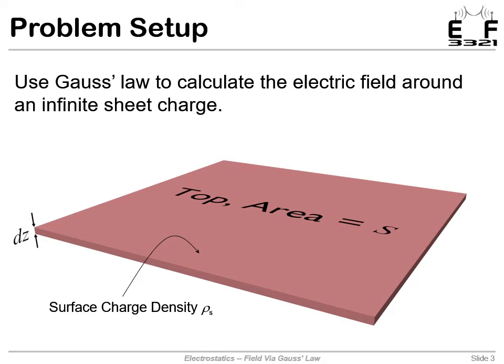So here's our infinite sheet charge. I can't draw an infinite sheet charge, so it's really just a sample from a sheet charge. And it has a differential thickness, dz, and a surface charge density, rho s. And in the area that I'm showing, it has an area of s. Let's go ahead and calculate the field around this.